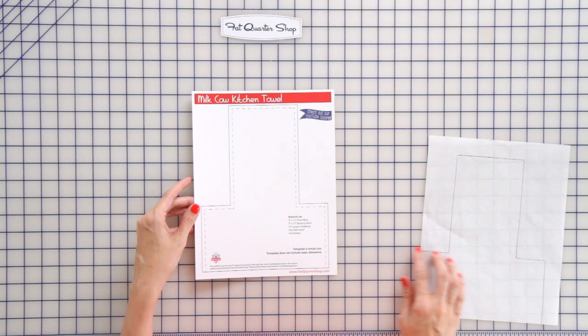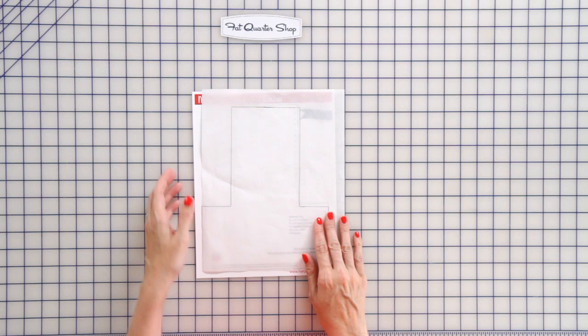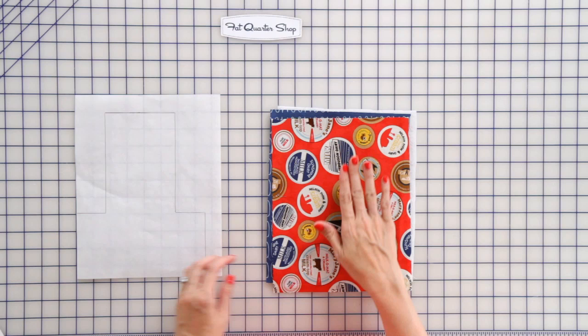We'll set that aside and use that in a minute. Download the free template from our website and you can either just cut around the template or trace it onto freezer paper. So I just traced around it.